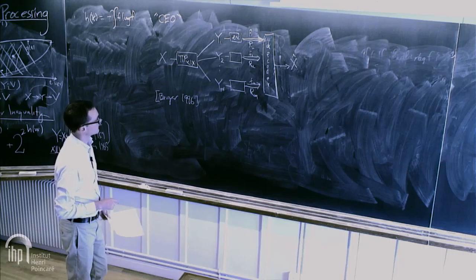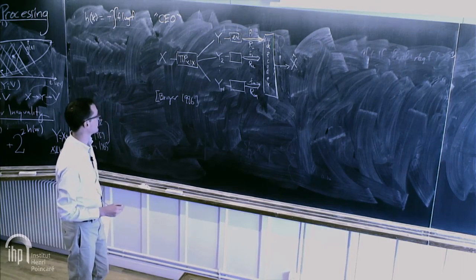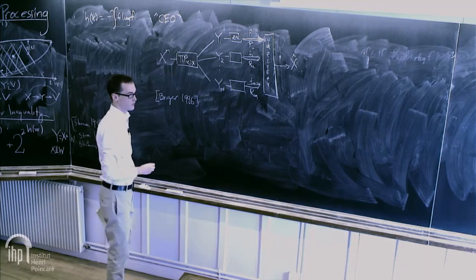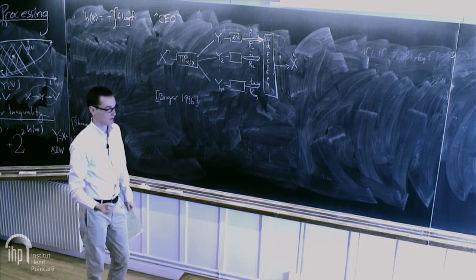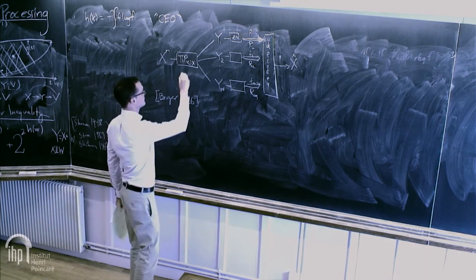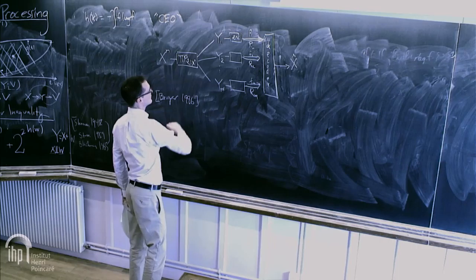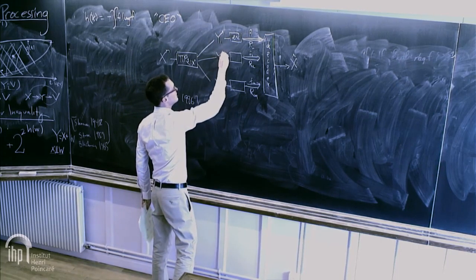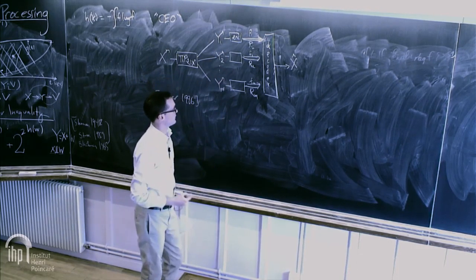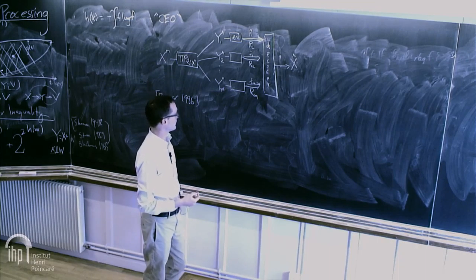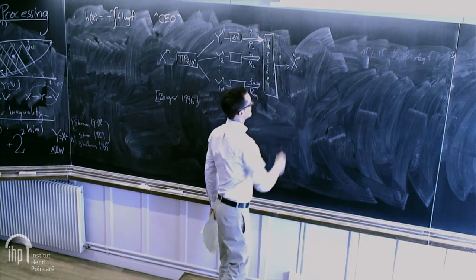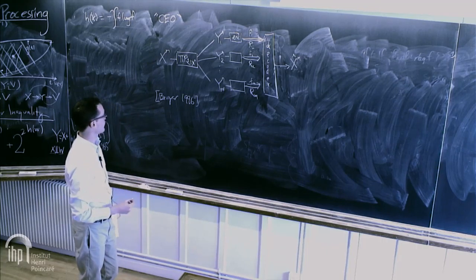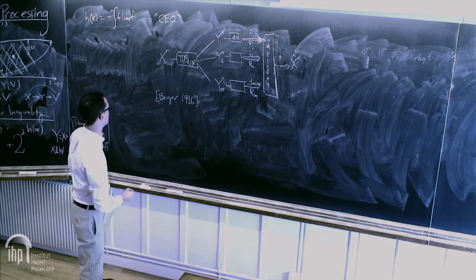In an information-theoretic setting, we observe n independent copies of X. The channel is memoryless — each observation gets independently corrupted — and I try to estimate the entire sequence. That's the CEO problem.